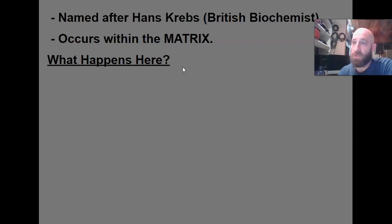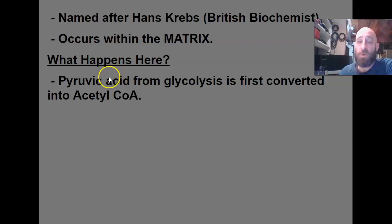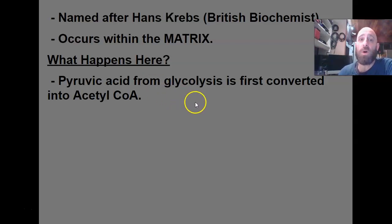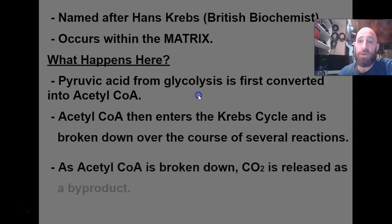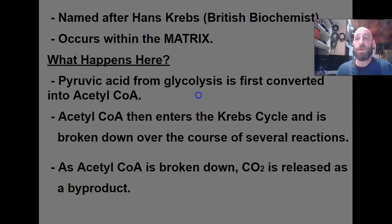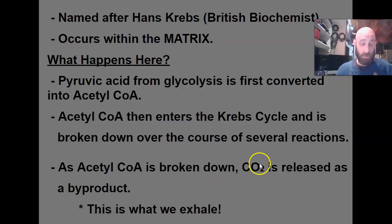The Krebs cycle is a complex process, but what's important is that it's the battery charger. The pyruvic acid from glycolysis — that three-carbon molecule — is converted into a molecule called acetyl-CoA using enzymes. Enzymes are what make this process go, which is why when your temperature goes too high or too low, this process stops. Acetyl-CoA then enters the Krebs cycle and gets broken down, releasing carbon dioxide as a byproduct. This is why you breathe out carbon dioxide — it happens during this step.